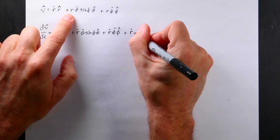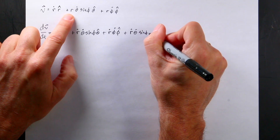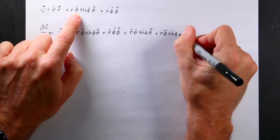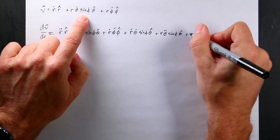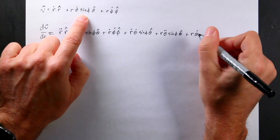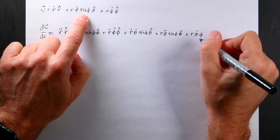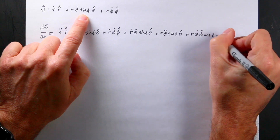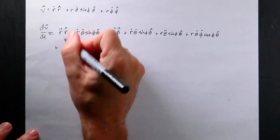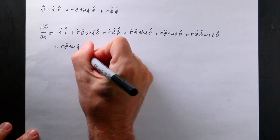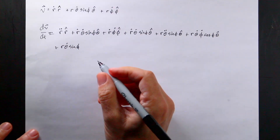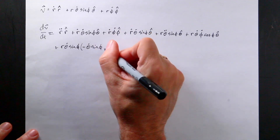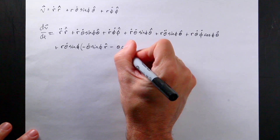Taking the derivative of the first term: r-dot r-hat gives r-double-dot times r-hat, plus r-dot times dr-hat/dt, which from my table equals theta-dot sine phi theta-hat plus r-dot phi-dot phi-hat. Then for the second velocity term, the first part gives plus r-dot theta-dot sine phi theta-hat, the second gives plus r theta-double-dot sine phi theta-hat, and taking the derivative of sine phi introduces a phi-dot, giving plus r theta-dot phi-dot cosine phi theta-hat. Then I multiply through by the derivative of theta-hat, giving negative theta-dot sine phi r-hat minus theta cosine phi.